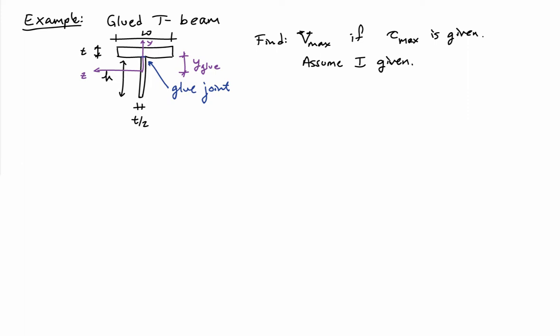What I'd like to do is determine the maximum amount of shear at any given section of the beam if the glue can only support a shear stress up to a given value tau max. So tau max is given, and I'd like to figure out what the maximum shear force V max is that I can transmit across one of these cross-sections.